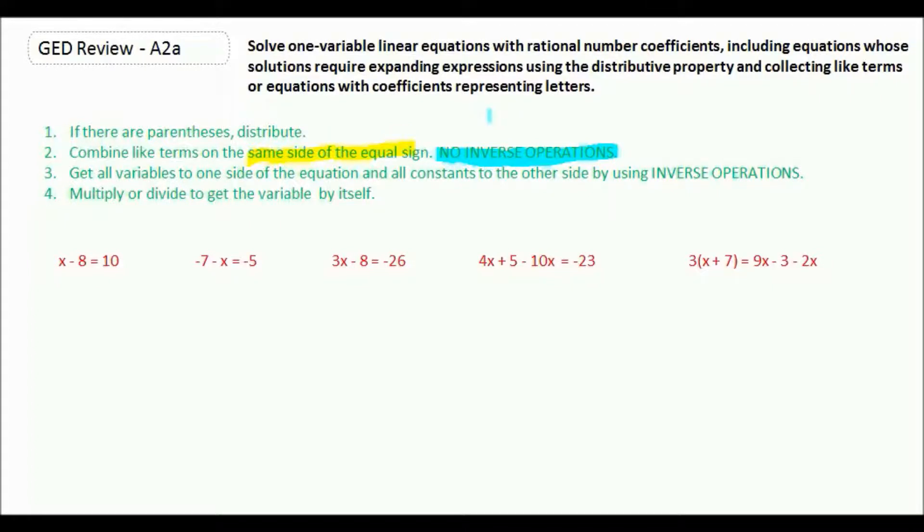When we're trying to move things from side to side, that's when we're going to be doing the opposite. But if we're just doing on the same side, there's no inverse operations needed. The next thing is to get all your variables to one side of the equation and all constants to the other side, and that's when your inverse operations will be needed.